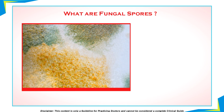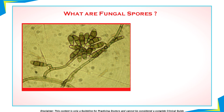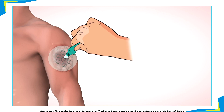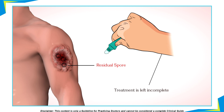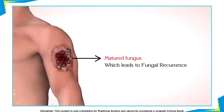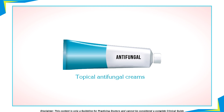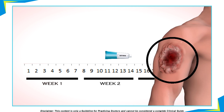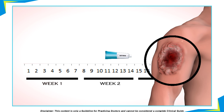So let's talk about what these fungal spores are. Fungal spores are nothing but microscopic reproductive structures in fungi. These spores have thick walls and can withstand environmental stress, enabling them to survive during unfavorable conditions. Residual spore load refers to the fungal spores that remain at the site of infection if treatment is left halfway or incomplete. These residual spores further reproduce and grow in number to form matured fungus, leading to fungal recurrence. Studies show that stoppage of oral or topical therapy before 3 weeks — the recommended time — is often associated with the reappearance of pre-existing lesions or even new lesions in other areas of the body.